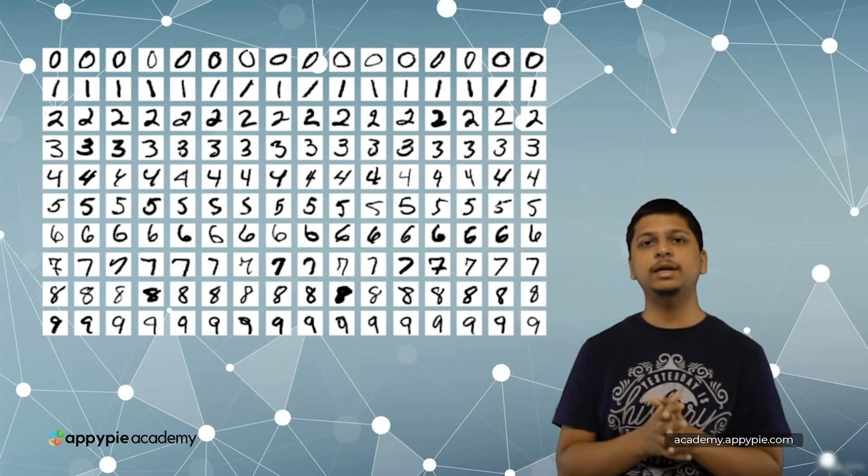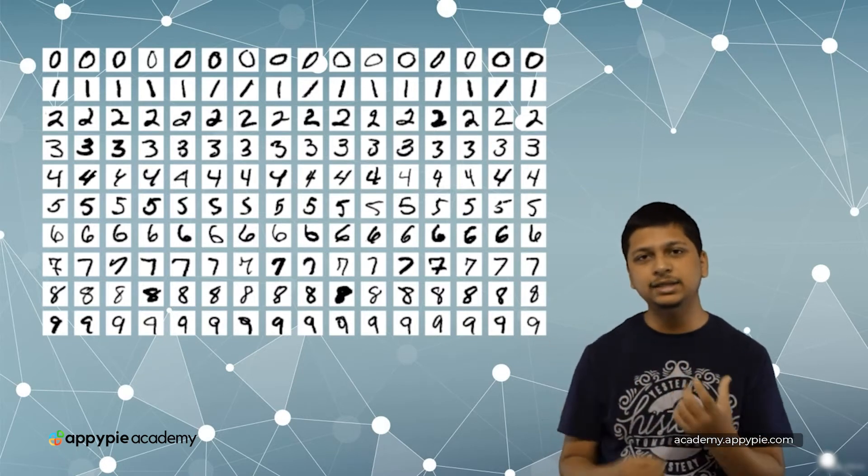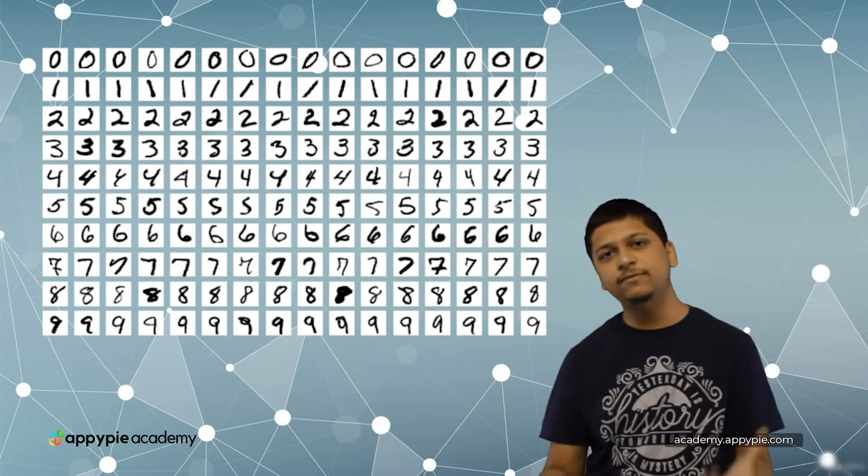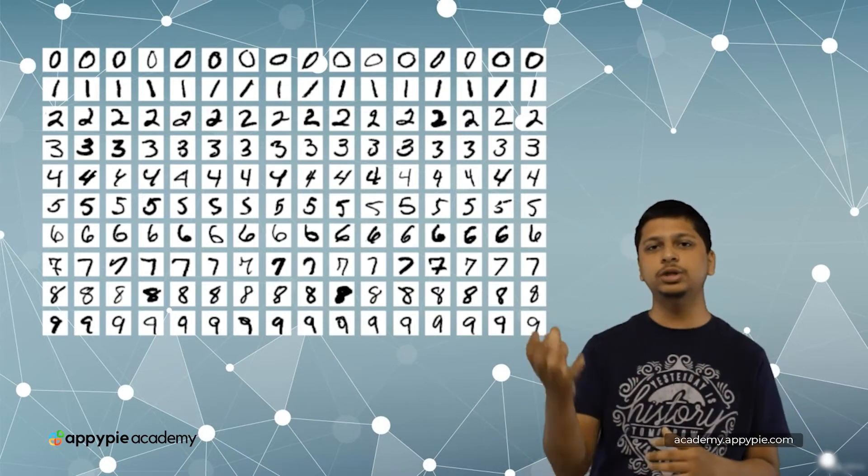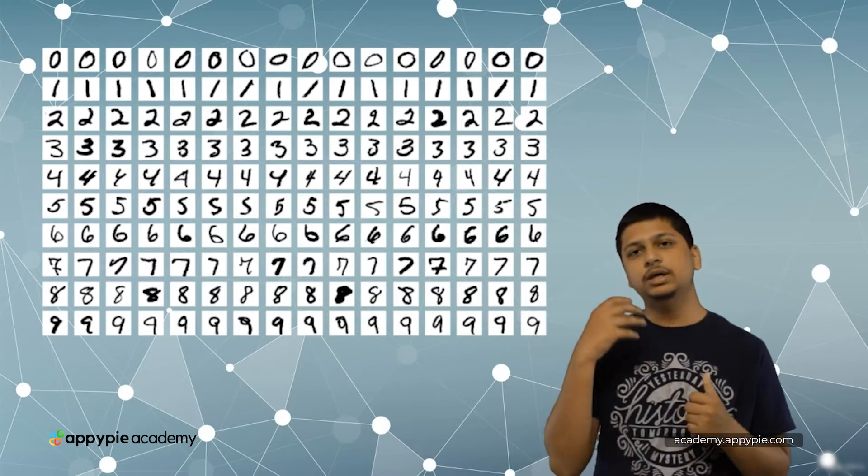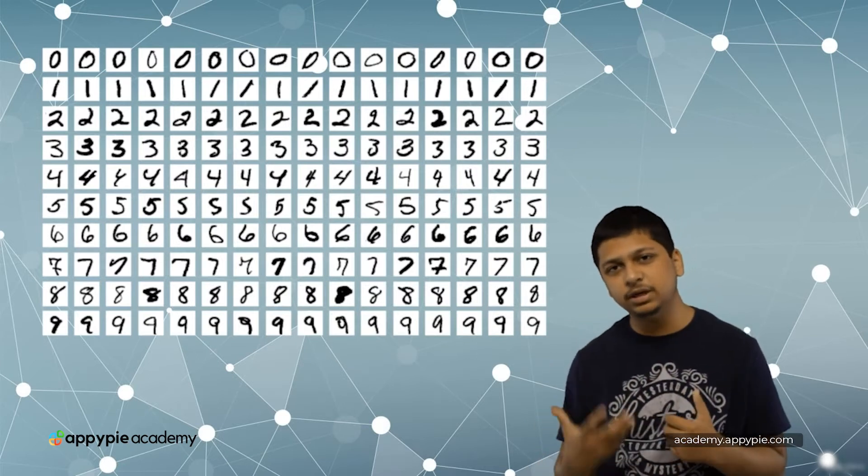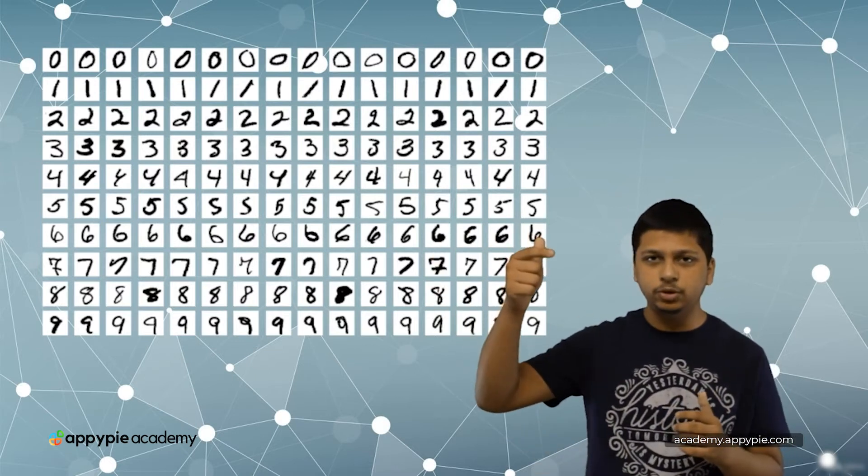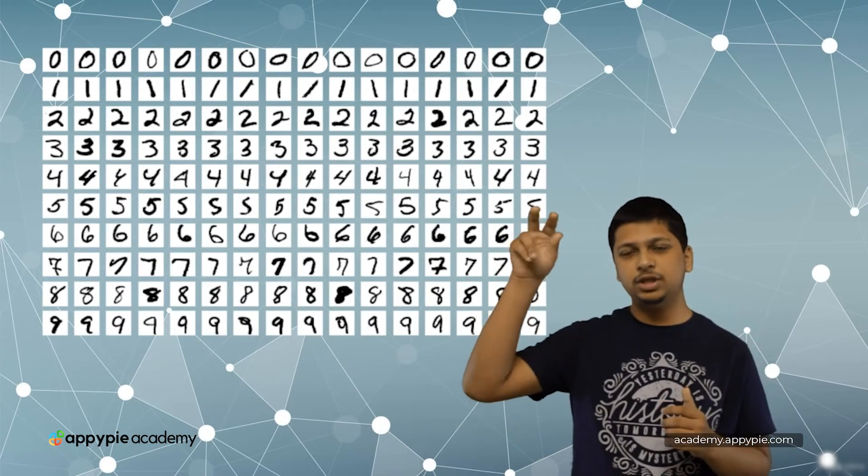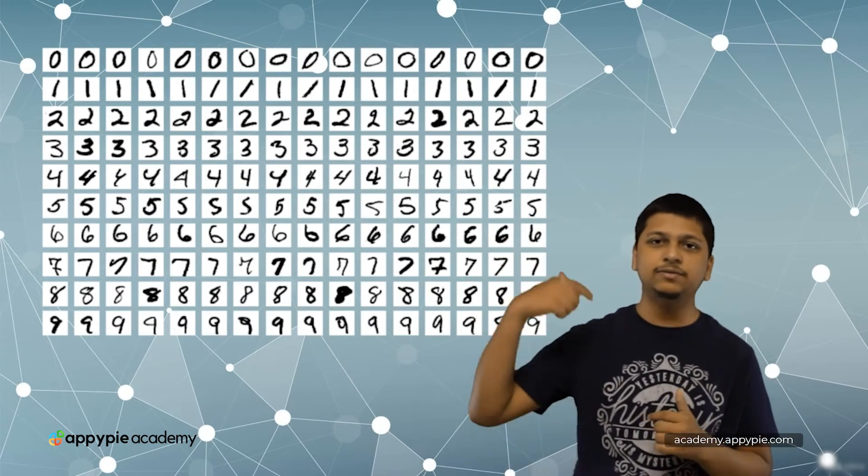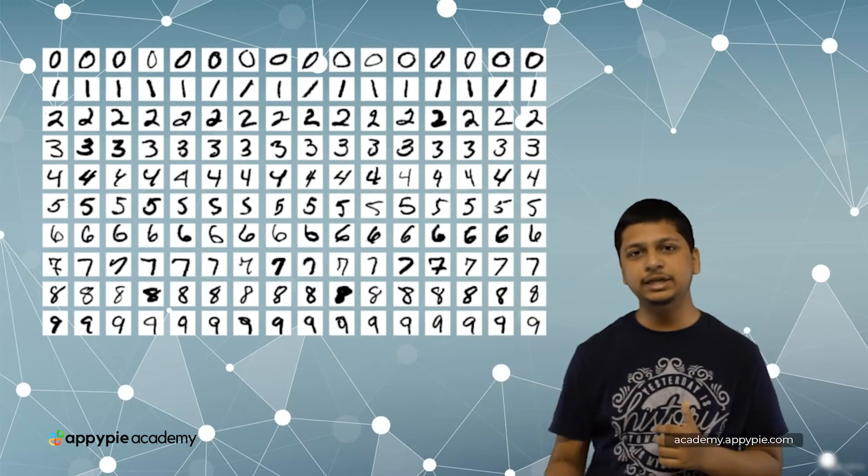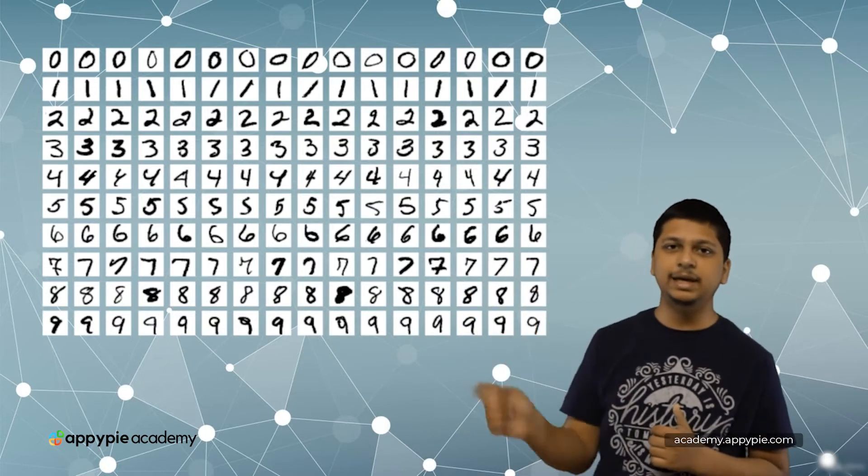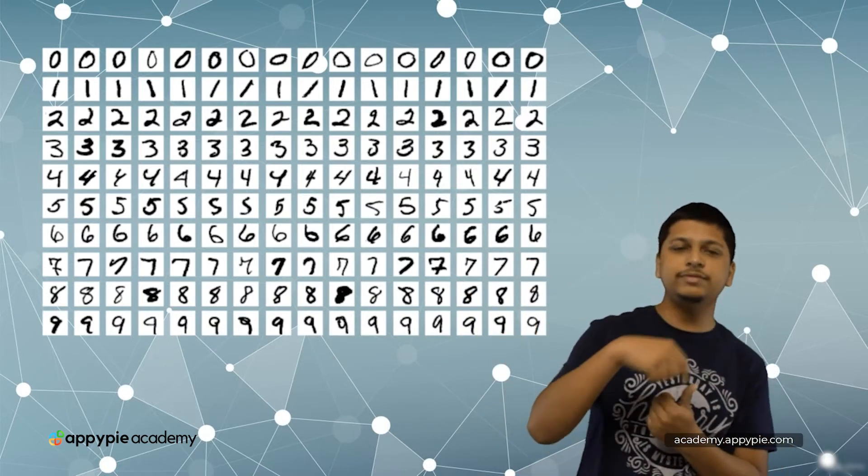But then you have a problem where if you have a user who writes a particular digit differently, essentially your algorithm fails at it because that rule is not entered into that algorithm. To get out of this problem, if you use machine learning, you essentially pass in the output, which is the particular number which should be recognized from the image of the handwritten digit. You pass in the digit and the image as well.